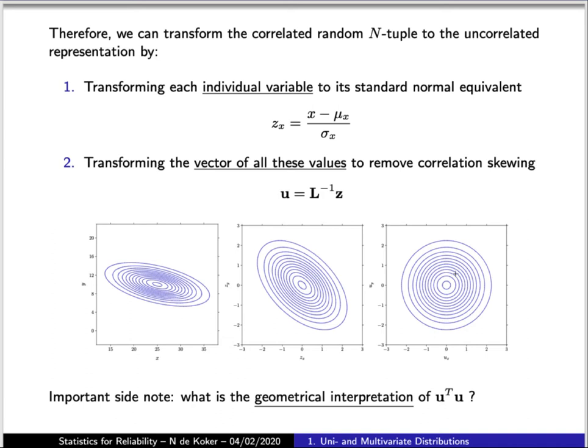So a very important geometrical interpretation of this product u^T*u that is in the distribution function is that what it simply is, is the distance of any given point in standard normal space from the origin. So let's say we have a point over there that corresponds to a vector u. And the distance, or the size of that vector, let's call that d, is then simply equal to the square root of this scalar product.